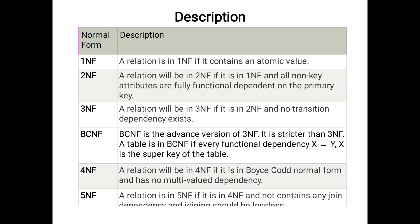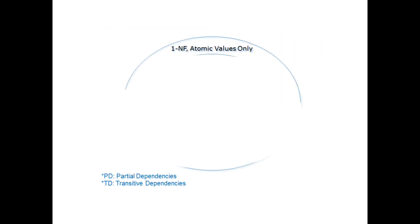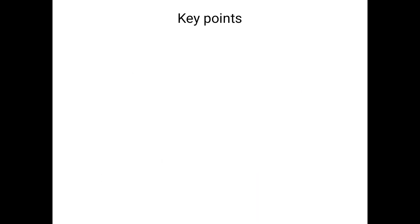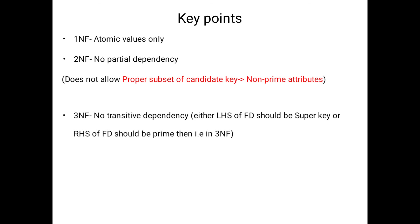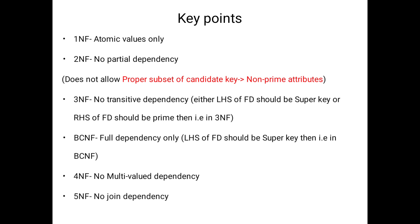To summarize: First Normal Form does not allow non-atomic values; Second Normal Form does not allow partial dependencies; Third Normal Form does not allow transitive dependencies; BCNF requires full dependency on a super key. In the next session we will discuss all normal forms with suitable examples. Thank you very much for your patience and for watching.